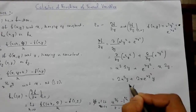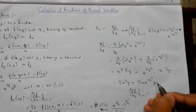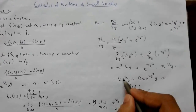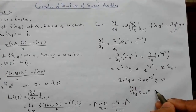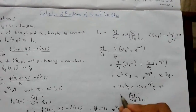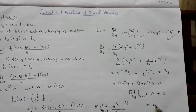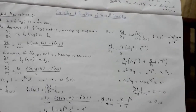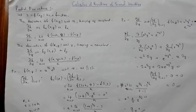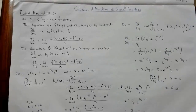Now evaluating at (1, 0), we substitute x = 1 and y = 0. Both terms become 0, so ∂f/∂y at (1, 0) equals 0. If you had any problems, comment below. If you liked my video, hit the thumbs up, share, and subscribe for more videos. Thank you.